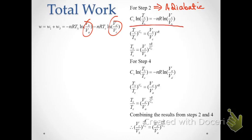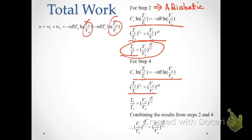We have an equation relating the temperature ratio to the volume ratio for step two. Getting rid of the natural logs with exponents, then dividing both sides' exponents by C_V, we arrive at the relationship T_H/T_C = (V_B/V_C)^(R/C_V). With step four, a similar derivation starting from the basic adiabatic equation, dividing through by C_V, gives us the same T_H/T_C ratio in terms of volumes V_D and V_A.